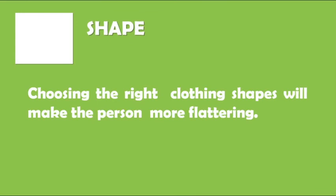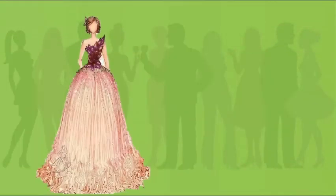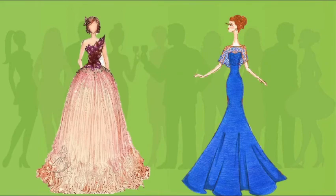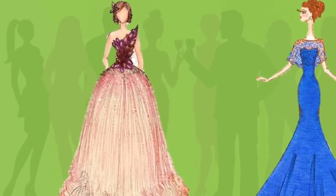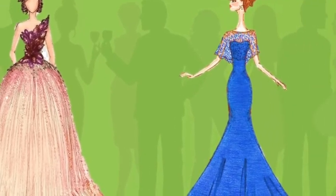The next element of design is shape. Shapes help clothes reveal or disguise a natural body contour. Choosing the right clothing shapes will make the person more flattering — wide, full-shaped clothes will make you look larger, while trim, compact dress will make you look smaller. Straight, tubular shapes will make the wearer look taller, while fitted clothes will reveal natural body contours.